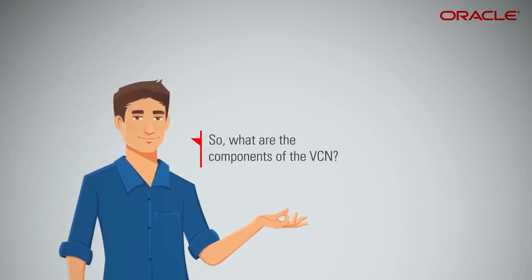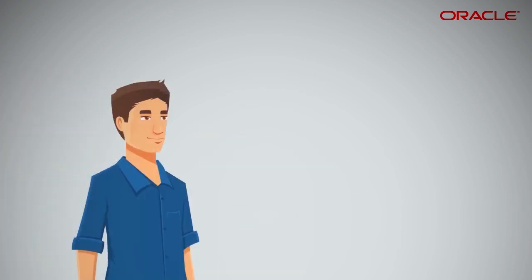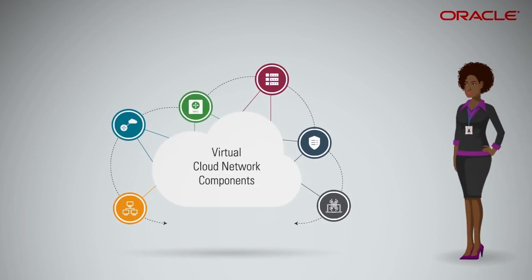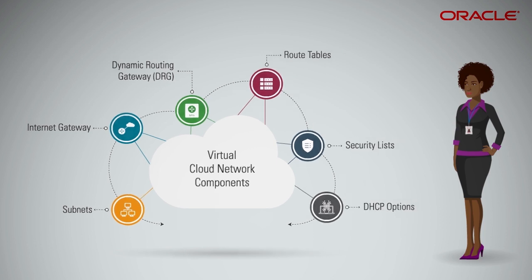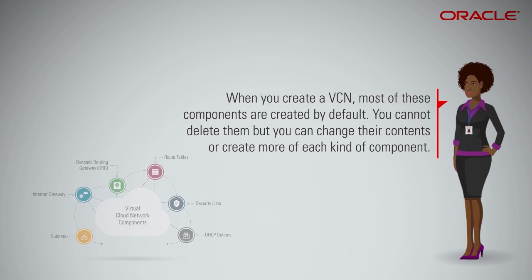So what are the components of the VCN? The typical VCN components are subnets, internet gateway, dynamic routing gateway or DRG, route tables, security lists, and DHCP options. When you create a VCN, most of these components are created by default. You cannot delete them, but you can change their contents or create more of each kind of component.